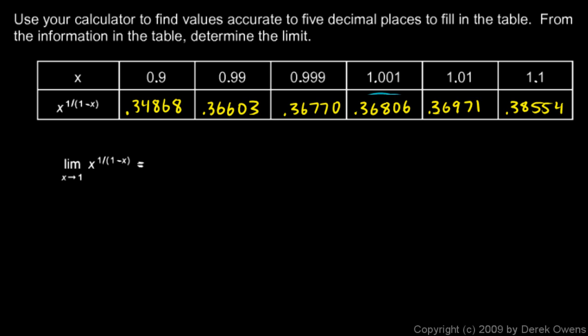So 0.36770 plus 0.36806 over 2. And that comes out to 0.36788. And one thing just to take note of, and I don't expect you to see this, but that, it turns out, is equal to 1 over e. So this is yet another expression that can be used to approximate a value for e.